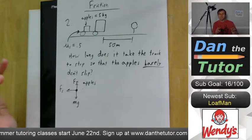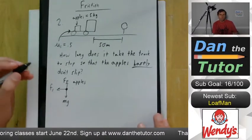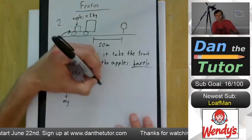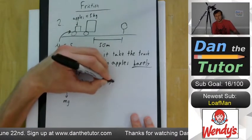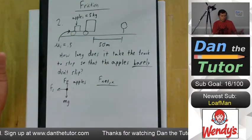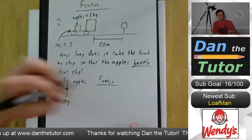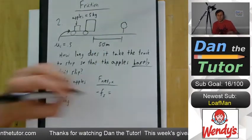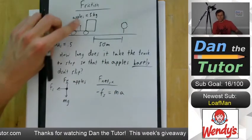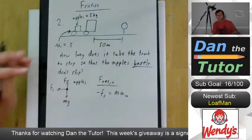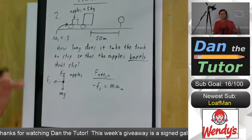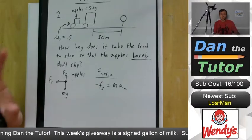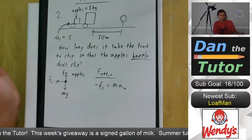Now we focus on step two: the sum of forces equation, in the x direction because we're talking about static friction. F-net-x: all forces to the right — there are none — minus the forces to the left, negative fs, set equal to mass times acceleration in the x direction. Is that acceleration zero? Definitely not zero because this thing is slowing down. We have an acceleration, we just don't know what it is yet.